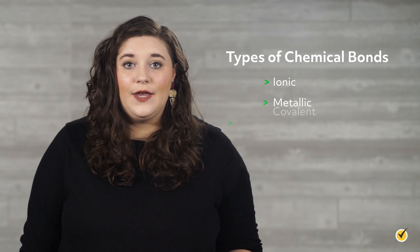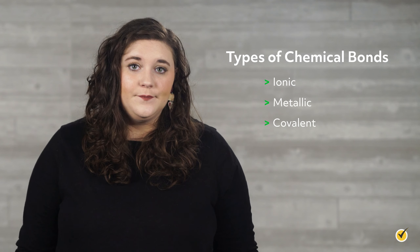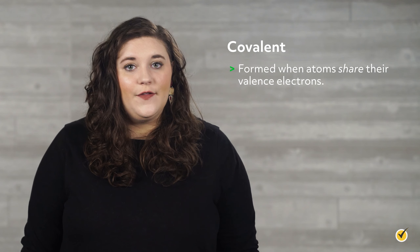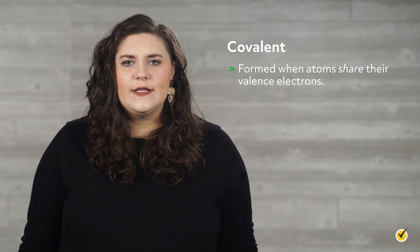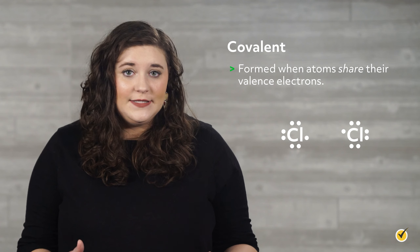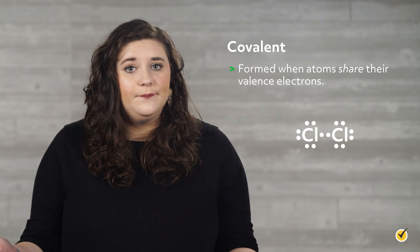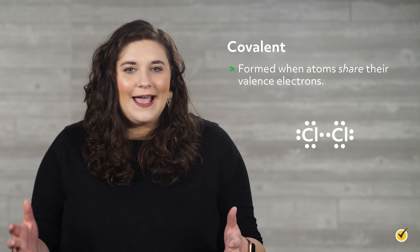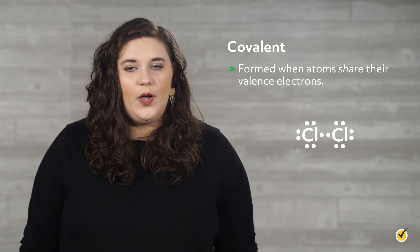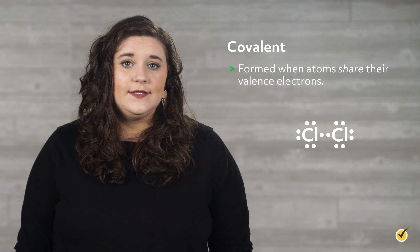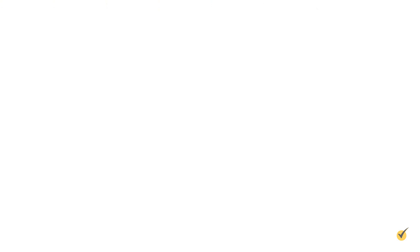Remember, there are a few different types of chemical bonds: ionic, metallic, and covalent are the main categories. Covalent bonds are formed when atoms share their valence electrons. For example, when two chlorine atoms come together, each donates one electron to the bond. Each chlorine has access to both bonding electrons, giving each chlorine eight valence electrons and satisfying the octet rule.